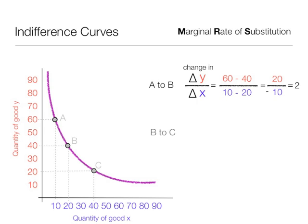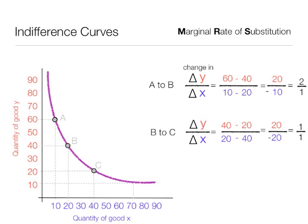Now what happens if we go from point B to point C? Again, a change in y divided by a change in x, so it is 40 minus 20, the change in y, divided by 20 minus 40, change in x. And that equals 20 divided by negative 20, and that equals 1. You might be wondering why we take away the negative sign. We don't use the negative sign. It is because we are measuring change.